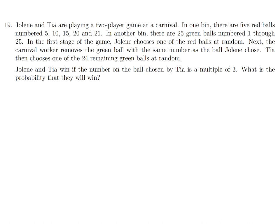Jolene and Tia win if Tia picks a multiple of 3 from the green bin. The red bin has 5, 10, 15, 20, 25, and the green bin has 1 through 25. The carnival worker removes the matching green ball to Jolene's red pick, then Tia chooses from the remaining 24 green balls.